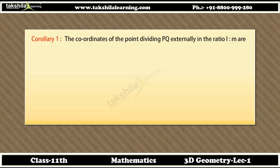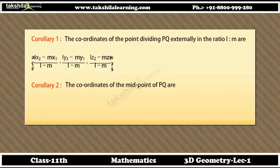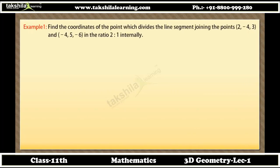Corollary 1: The coordinates of the point dividing PQ externally in the ratio L:M are [(LX2 − MX1)/(L − M), (LY2 − MY1)/(L − M), (LZ2 − MZ1)/(L − M)]. Corollary 2: The coordinates of the midpoint of PQ are [(X1 + X2)/2, (Y1 + Y2)/2, (Z1 + Z2)/2]. Example of section formula: Find the coordinates of the point which divides the line segment joining (2, −4, 3) and (−4, 5, −6) in the ratio 2:1 internally.